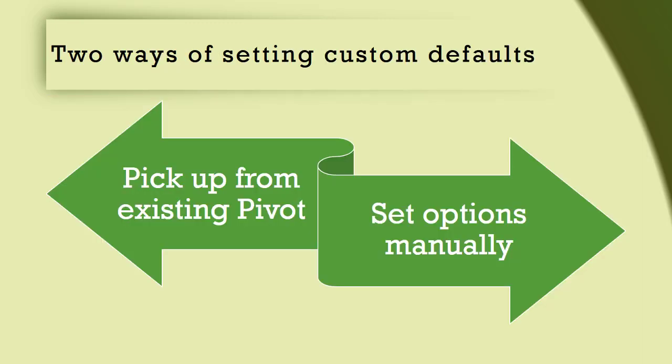How do you create a custom set of default settings? There are two ways. If you have already put effort in customizing a pivot table, you can pick up all the settings from that pivot directly, or you can use the options menu.